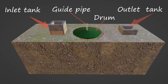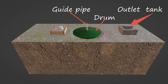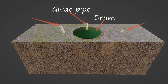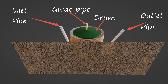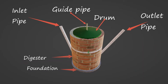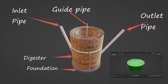We will now remove parts of the biogas plant one by one to see the hidden components. Removing the inlet and outlet tanks, note that the inlet tank level is higher than the outlet — this ensures slurry moves out through the outlet only. Removing the inlet and outlet tanks reveals the inlet and outlet pipes used for movement of slurry. We still need to remove the top and front soil layers to uncover the remaining parts, including the digester and foundation.